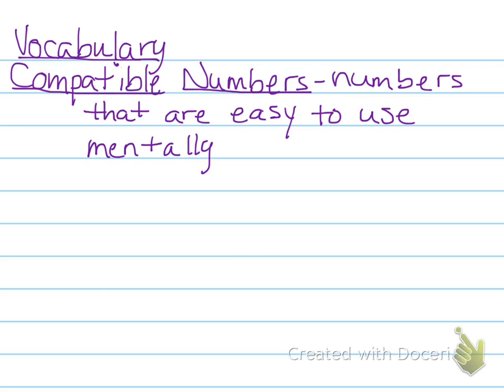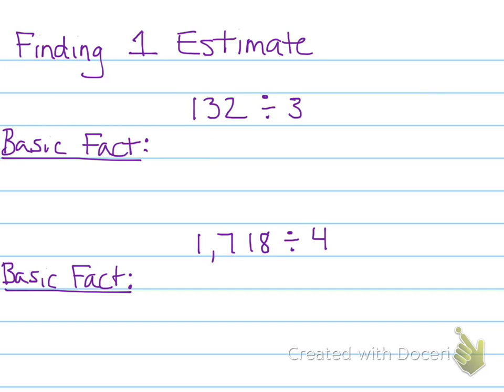All right, here we go. So we're estimating again, right? So we're going to use compatible numbers to make it easy on ourselves because estimating should be easy. So when you need to find one estimate, I'm going to change my color here real quick. Let's do green. When you need to find one estimate, you look and try to find the basic fact. Well, 13 divided by 3, I know 3 does not go into 13 evenly. I'm going to think of a compatible number that's close to 13 that I know 3 can go into.